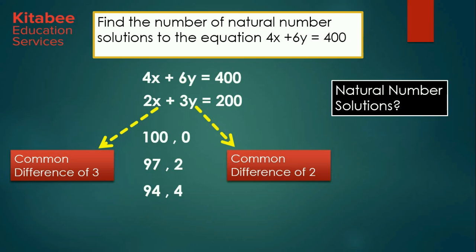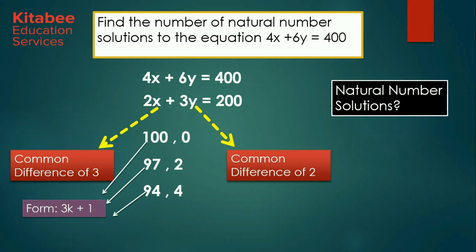We need to find the last solution satisfying this equation. The values of x — specifically 100, 97, 94 — are at a common difference of 3. These numbers are of the form 3k plus 1. When we put k equal to 0 we get one solution as 1, 66, and this would be the last solution. Thus all these solutions satisfy the equation 2x plus 3y equal to 200.